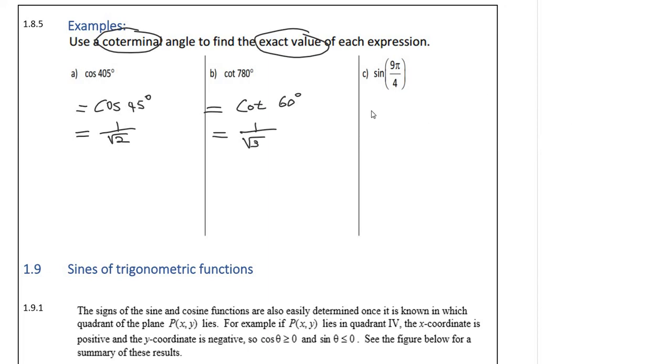Now this is sine. So 9π over 4, I am going to subtract 2π. 9π over 4 minus 2π, that gives me π over 4. So this is sine π over 4. Well that is 45 degrees, so this will just be 1 over square root 2.